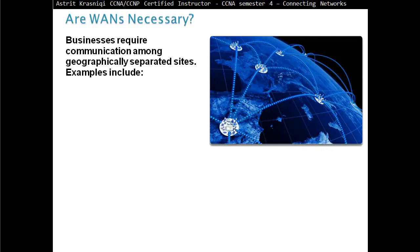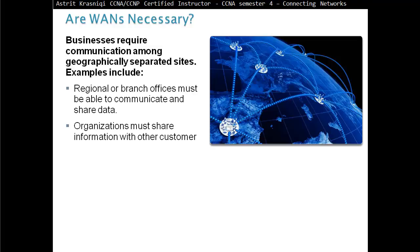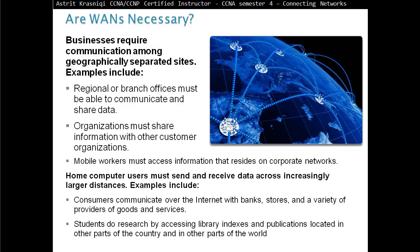Are Wide Area Networks necessary? Businesses require communication among geographically separated sites. Examples include regional or branch offices must be able to communicate and share data. Organizations must share information with other customer organizations. Mobile workers must access information that resides on corporate networks. Home computer users must send and receive data across increasingly large distances. Examples include consumers communicate over the internet with banks, stores, and a variety of providers of goods and services. Students do research by accessing library indexes and publications located in other parts of the country and in other parts of the world.